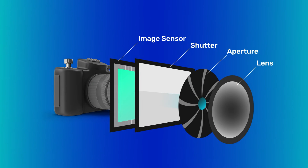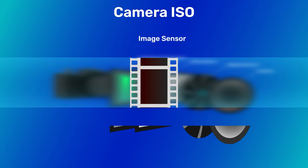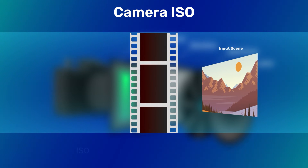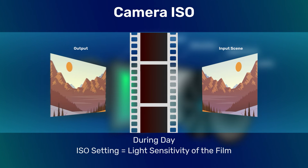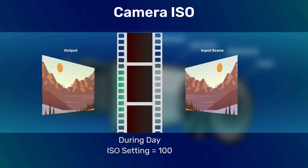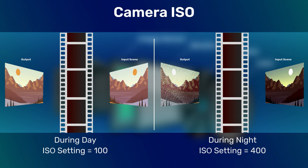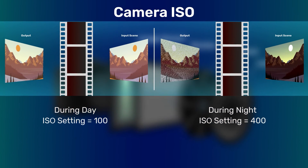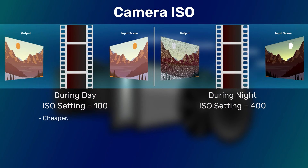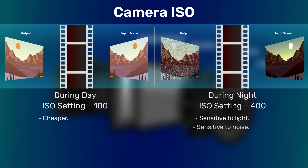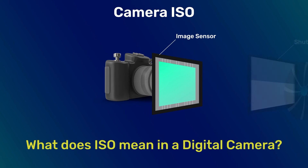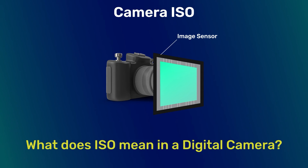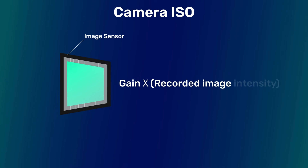Another setting you may find on an SLR camera is called the ISO setting. Back in the day when we used film to take pictures, ISO setting corresponded to the light sensitivity of the film. During the day you could use a film with ISO setting 100, and during the night you used a film with ISO setting 400 or higher. Why not always use ISO 400 film? First, ISO 100 was much cheaper. Second, ISO 400 film was sensitive to light, but it was also sensitive to noise. So what does ISO mean in a digital camera? We do not change the sensors on a digital camera, so the ISO setting simply means a gain multiplied to the recorded image intensities.